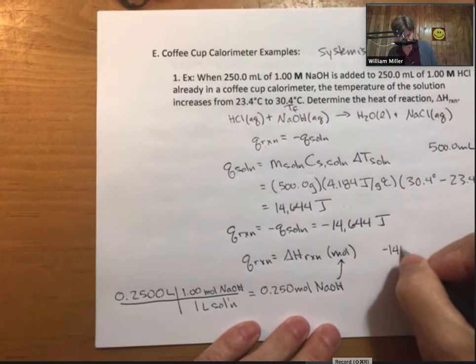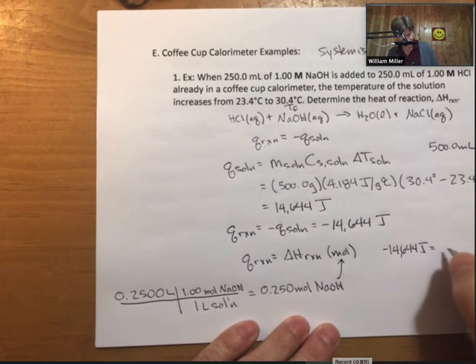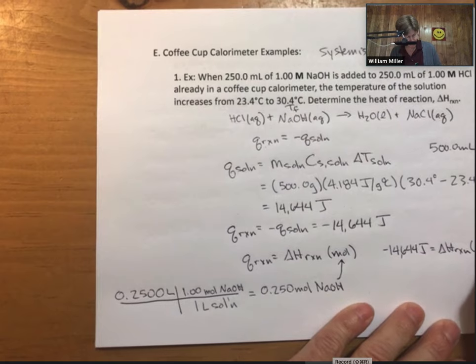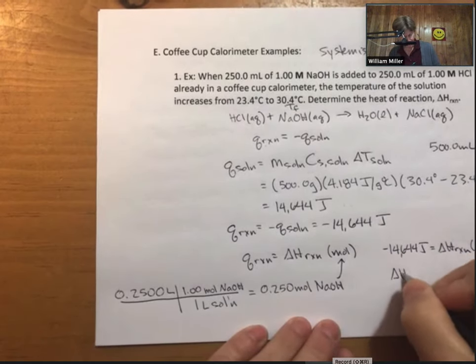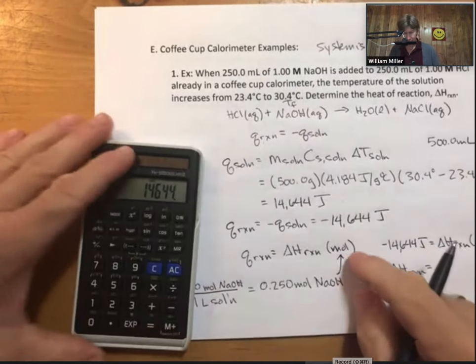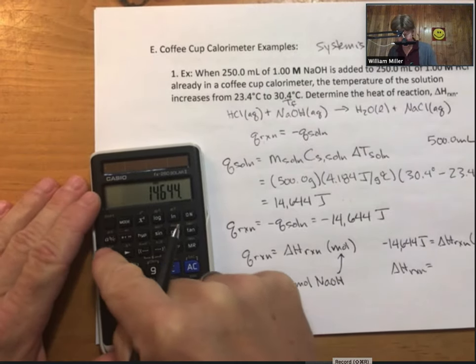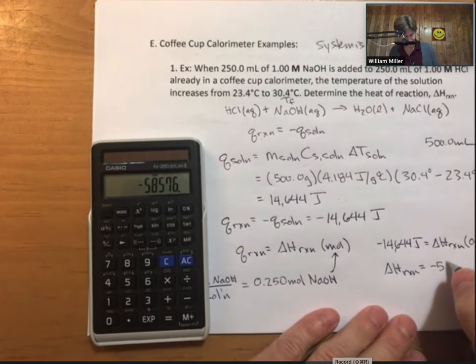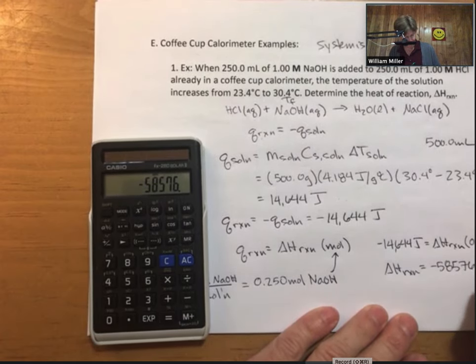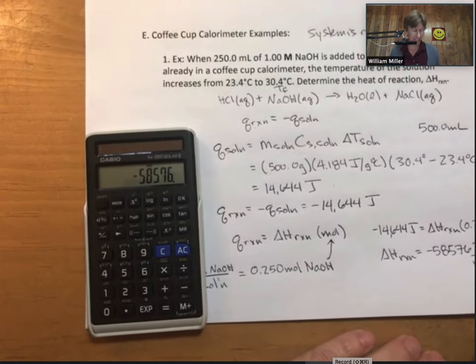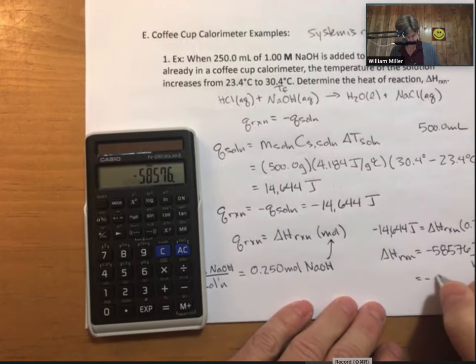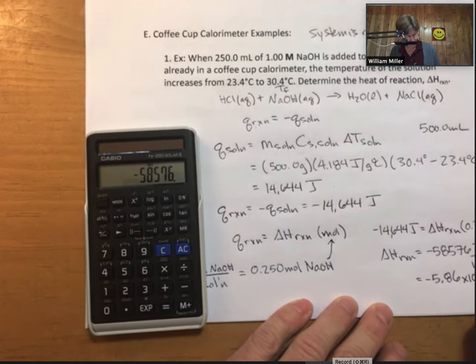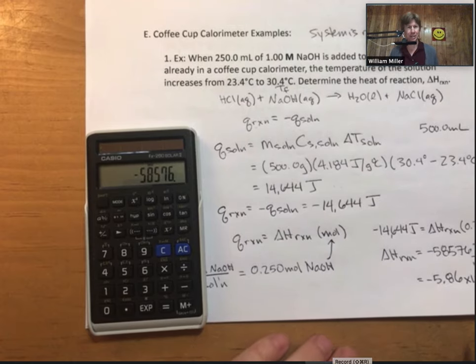Minus 14,644 joules - that's our q. We don't know our delta H reaction. Our delta H reaction, minus 14,644 divided by 0.250, we get minus 58,576 joules per mole. Rounding that to three sig figs, 5.86 times 10 to the fourth joules per mole, and that is our final answer for this.